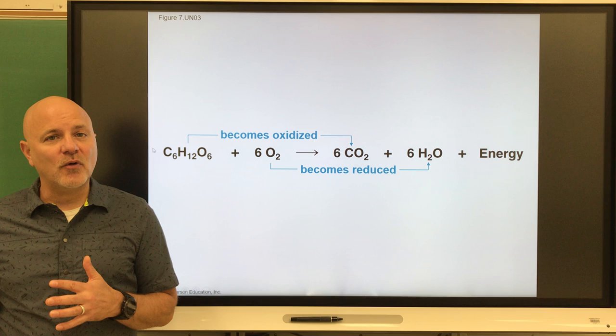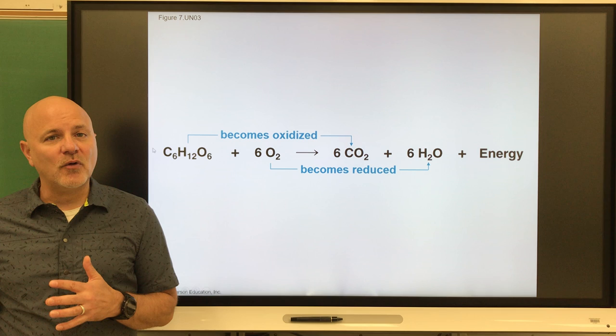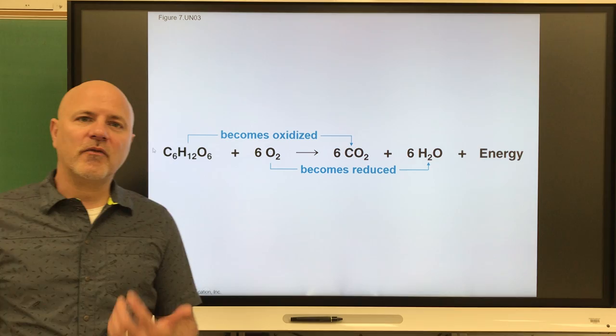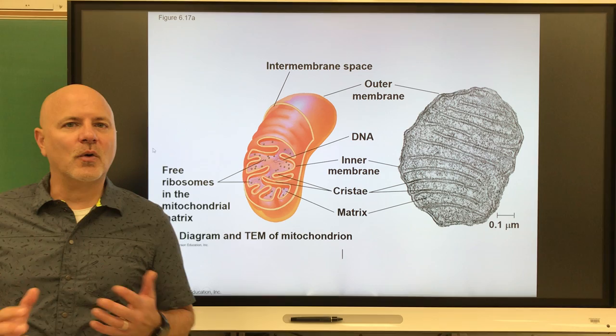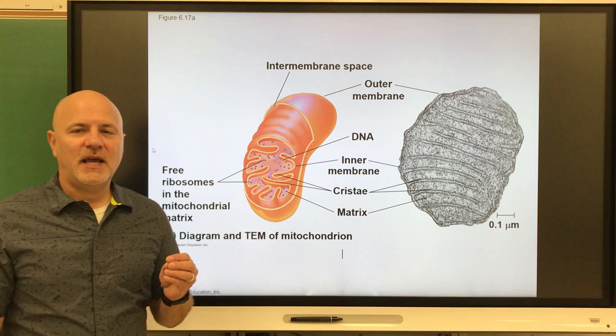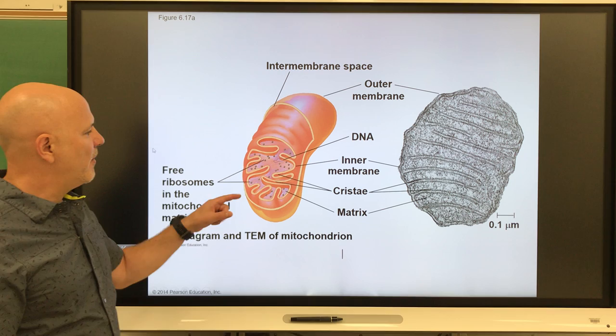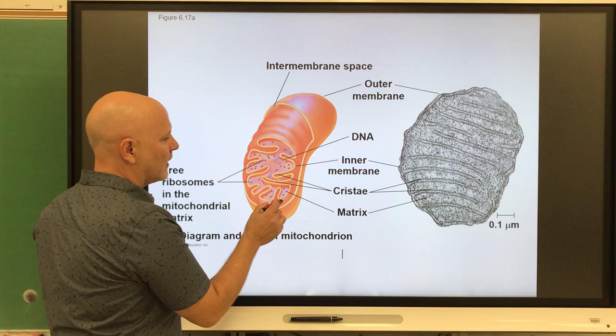There is another form of respiration called anaerobic respiration — we'll get to that after aerobic respiration. Aerobic respiration occurs in mitochondria, which is an organelle in which aerobic respiration takes place. Mitochondria have their own DNA, their own RNA, their own ribosomes, and they are double-membraned. That inner membrane has folds called cristae, and inside that inner membrane is the matrix — a gel-like fluid similar to cytoplasm found on the inside of the mitochondria.